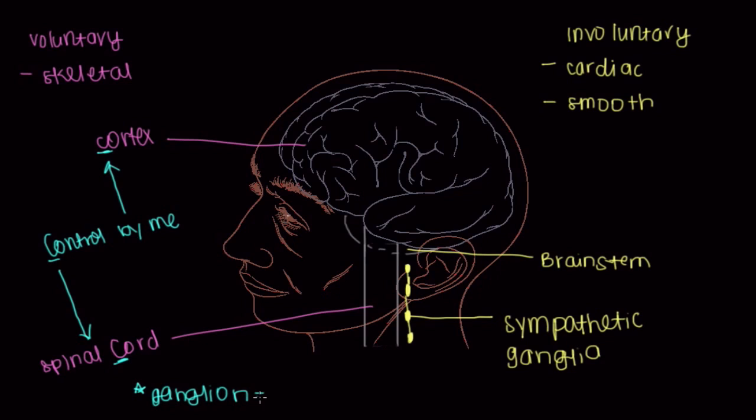A ganglion is just a cell body, or a soma of a neuron, that sits outside the brain and spinal cord. I'll just write brain right here. Outside the brain and spinal cord. And most of these ganglia sit beside the spinal cord. So that's an important point.